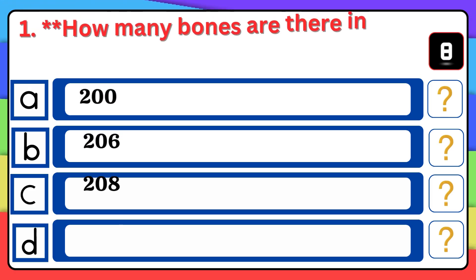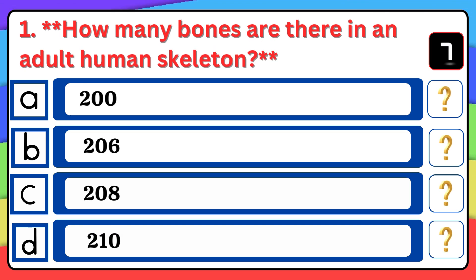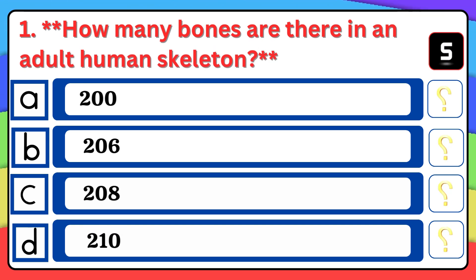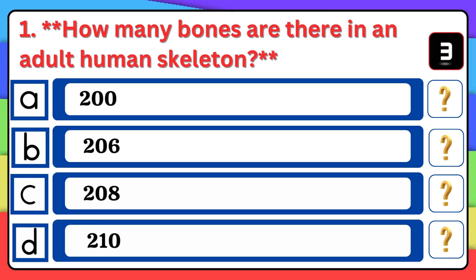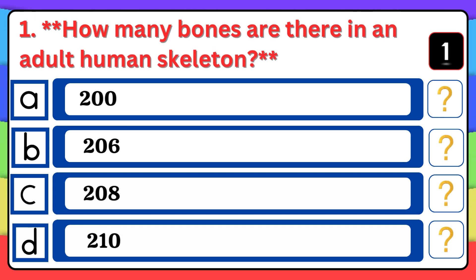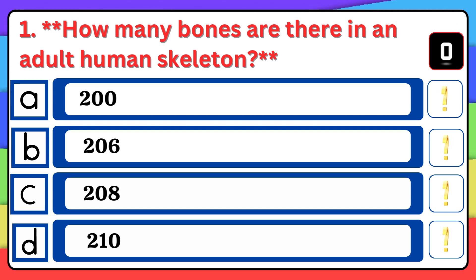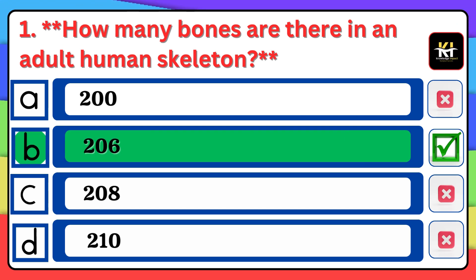Question number one: How many bones are there in an adult human skeleton? Correct answer: Option B — 206.